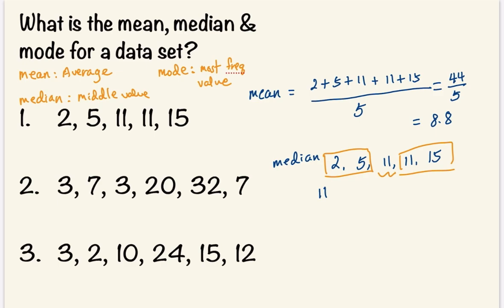And finally, our mode. The mode is 11 because it occurs more times than any of the other values.